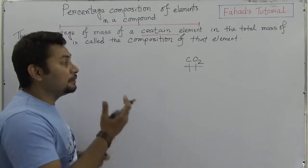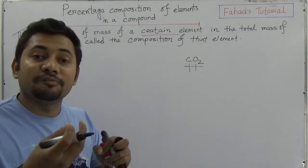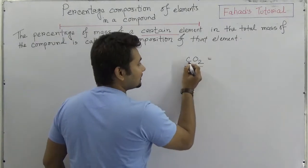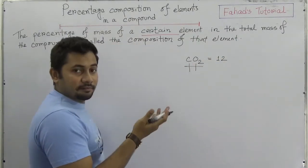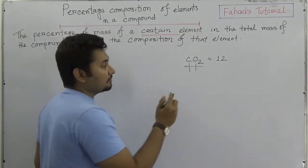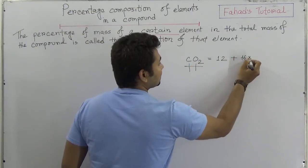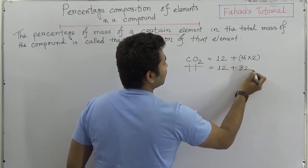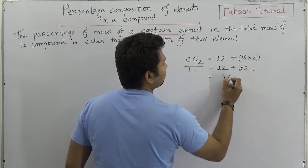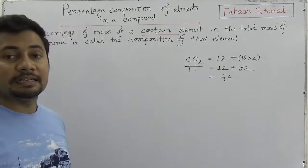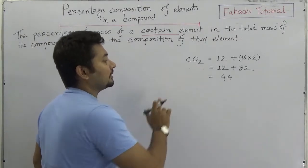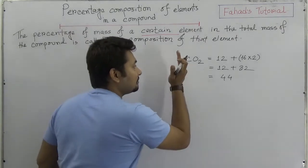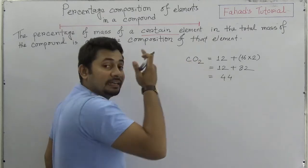If that is the question, we need to first find the relative molecular mass of the compound. In this case, carbon has atomic mass 12, and oxygen is 16 times 2, which is 32. So altogether it's 12 plus 32, which is 44. We already know that the molecular mass of carbon dioxide is 44. Now we need to find the percentage of carbon and oxygen separately.